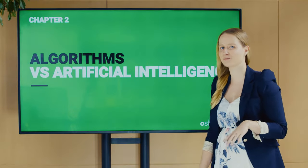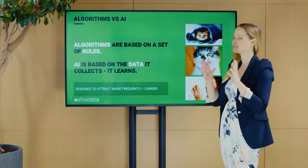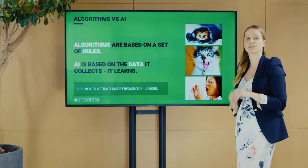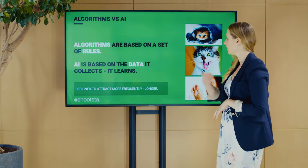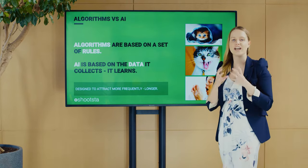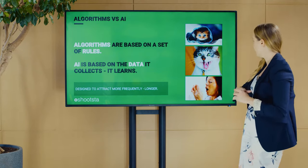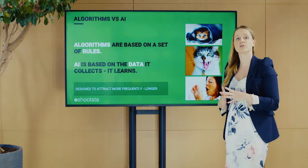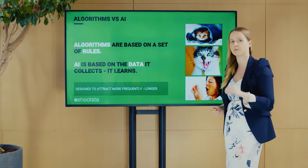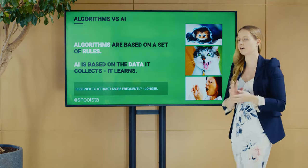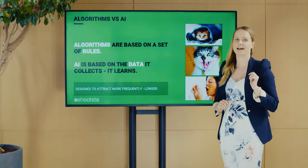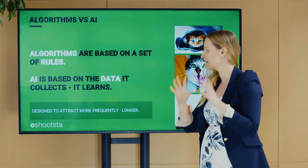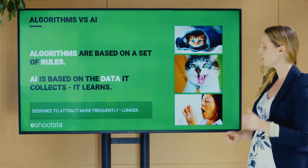Let's talk about the difference between algorithms and AI. An algorithm is software based on a set of rules — if this, then that. If you're looking for cute cats, it starts serving you other cat videos. AI, on the other hand, collects data about you and wants to learn everything you're interested in. Back to the cat example: it might also know you've been searching about sneezing, put two and two together, and start serving you videos about cat allergies. Both algorithms and AIs are designed to attract you to Facebook and YouTube more frequently and for longer periods of time.